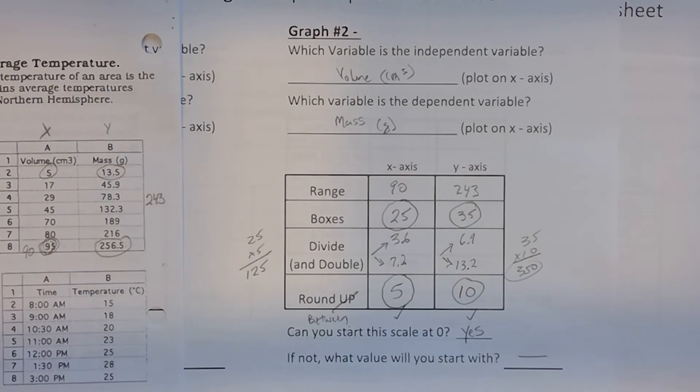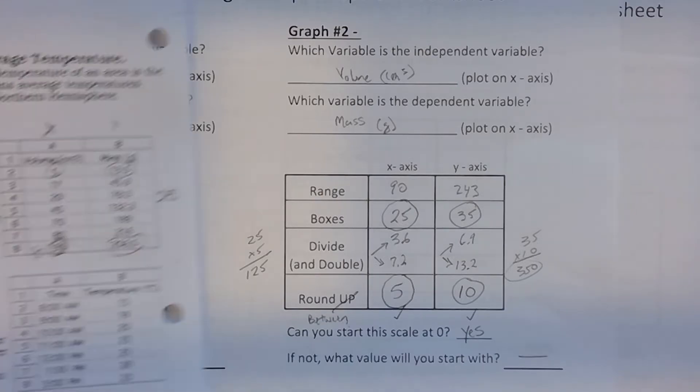That one's a fairly easy one. You're going to plot the points, connect it, see what type of relationship. It should be a direct relationship. The larger the volume, a bigger piece of, say, aluminum, would have a greater mass.